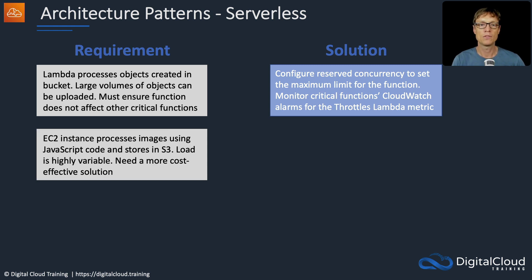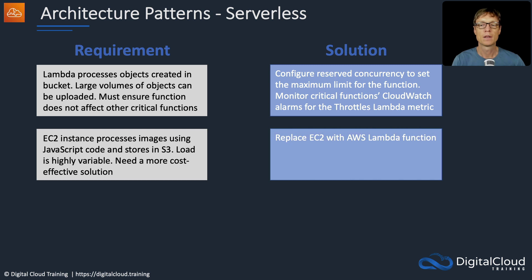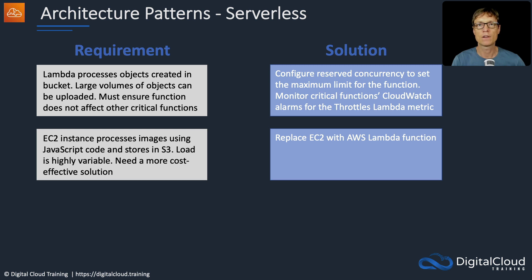An EC2 instance processes images using JavaScript code and stores it in S3. The load is highly variable and you need a more cost-effective solution. Simply replace EC2 with a Lambda function — this comes up in exam questions all the time. Lambda is often more cost-effective than EC2 because you only pay when it's actually executed, and it's great for highly variable loads because it scales really fast without waiting for auto scaling.